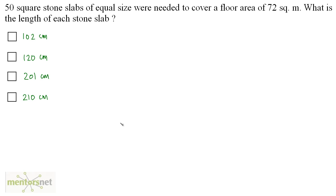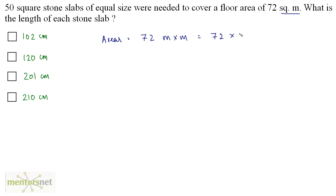50 square stone slabs of equal size were needed to cover a floor area of 72 square meters. What is the length of each stone slab? The area is given in square meters but the answers are in centimeters, so let's convert: 72 square meters = 72 × 100 cm × 100 cm = 720,000 square centimeters.